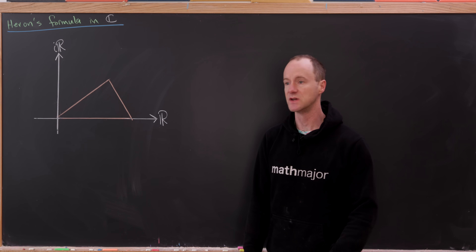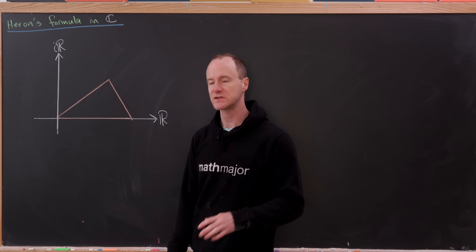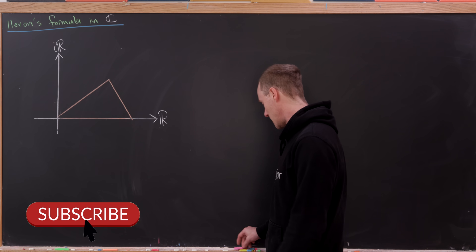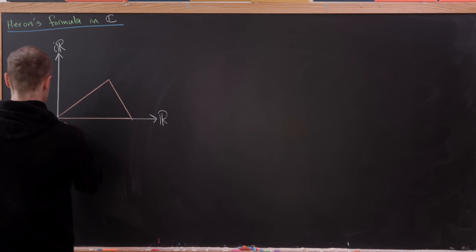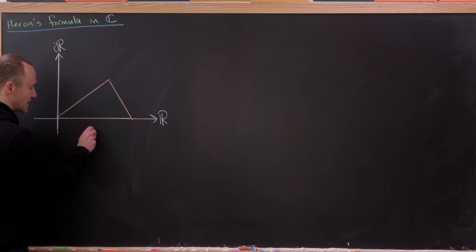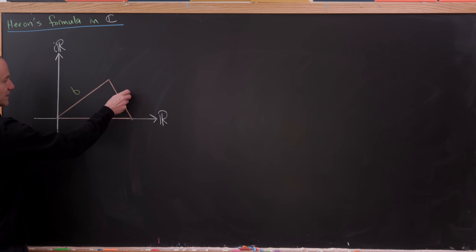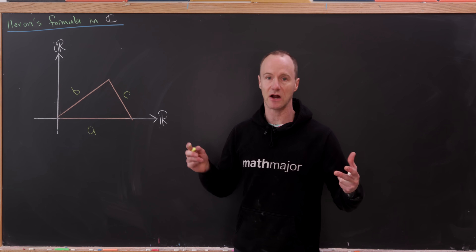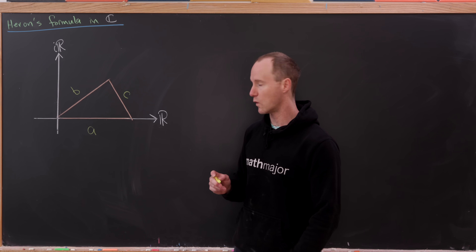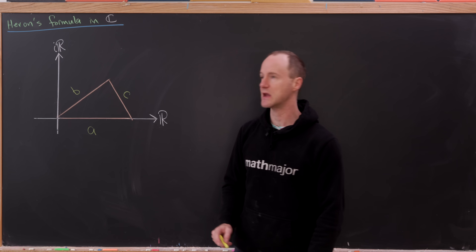Today we're going to use the geometry of the complex numbers to build Heron's formula, which is a formula for the area of a triangle in terms of the side length. We start with a triangle placed inside the complex plane. We'll name the sides: side A coincides with the real axis, side B is the line segment from the origin not along the real axis, and side C is the remaining side. We can orient the triangle so that one side lies along the real axis and apply a reflection so the other vertex is in the first quadrant.